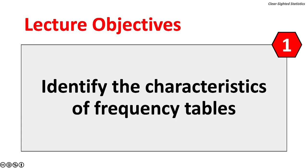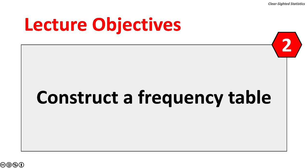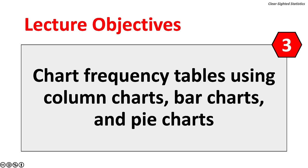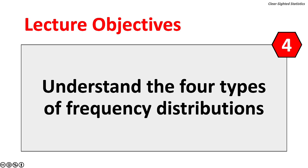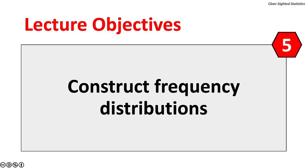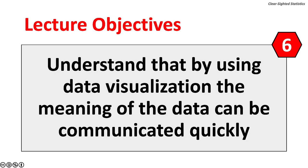This lecture has nine objectives. One, identify the characteristics of frequency tables. Two, construct a frequency table. Three, chart frequency tables using column charts, bar charts, and pie charts, as well as discuss why pie charts should not be used. Four, understand the four types of frequency distributions. Five, construct the four kinds of frequency distributions. Six, understand that by using data visualization, the meaning of the data can be communicated quickly.